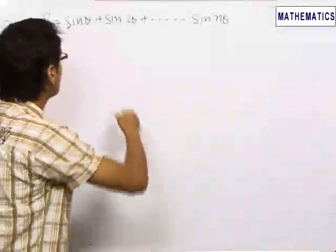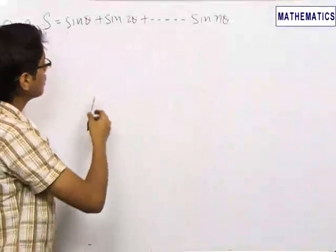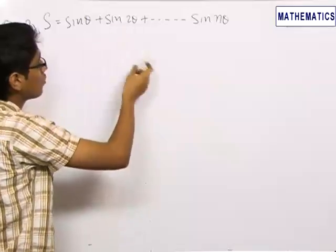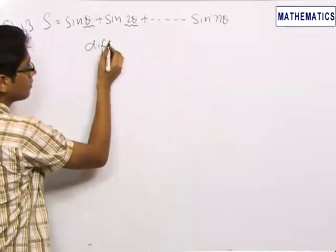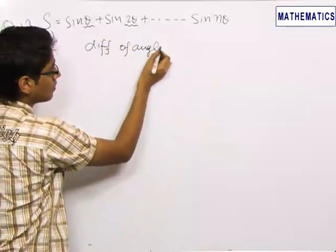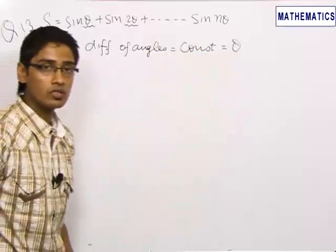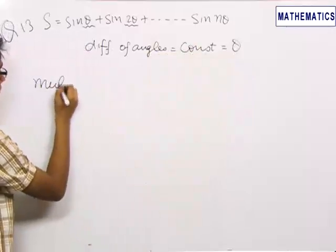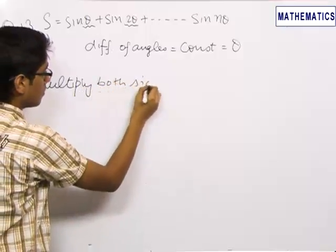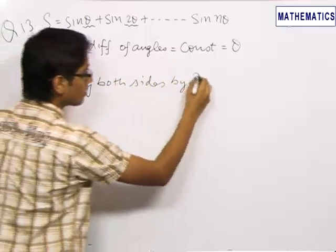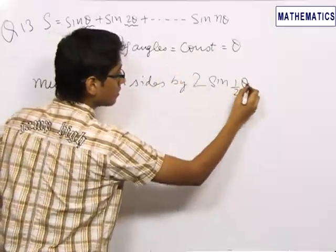In our 13th problem, we need to find the sum of sin θ + sin 2θ + sin 3θ up to sin nθ. In this question, we can see that the difference of angles is constant — here it is θ, then 2θ, then 3θ — so the difference of angles is constant and equal to θ. The important trick used in this question is we multiply both sides by 2 times sin of half the difference in angles, which is θ in this case.